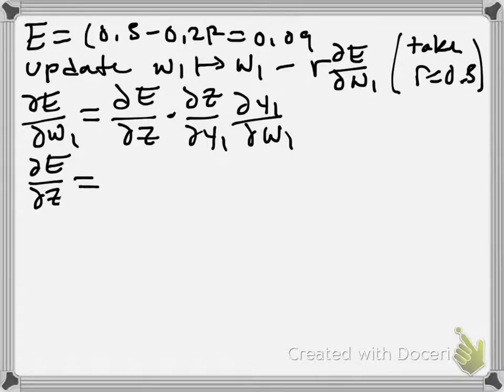So dE/dZ, what's that going to be? Well, that's just 2 times Z minus 0.2, kind of the same form we've seen before. Remember, 0.2 is our target, and Z is our variable in this.